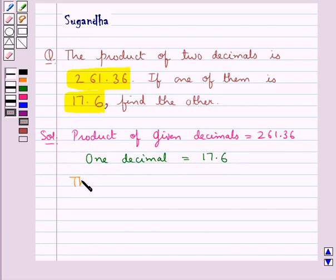So the other decimal would be given by dividing 261.36 by 17.6. That is, when we divide the product of the given decimals by one of the decimals, this would give us the other decimal.